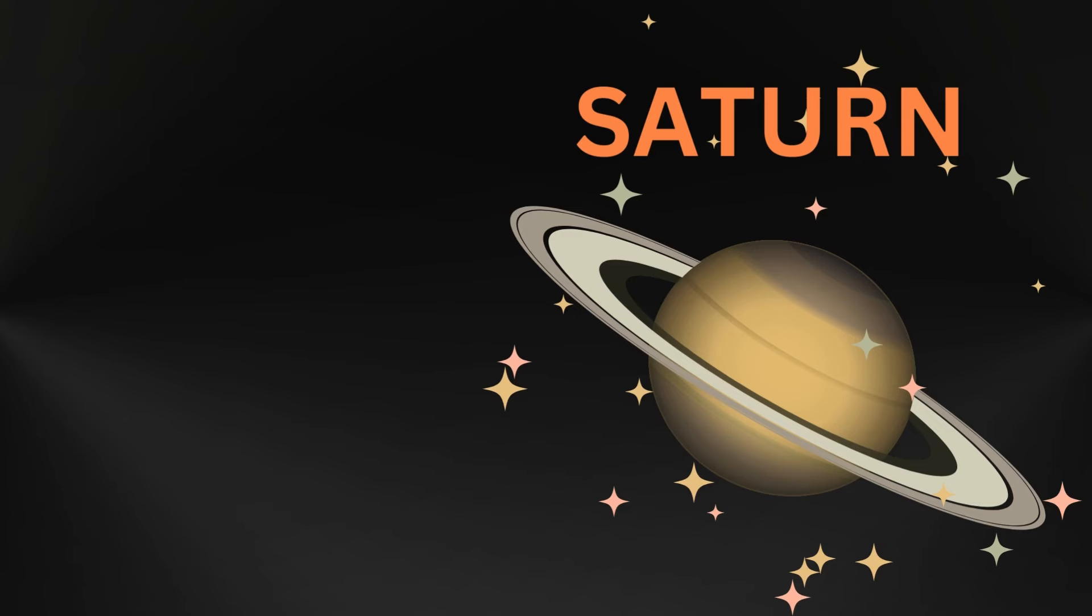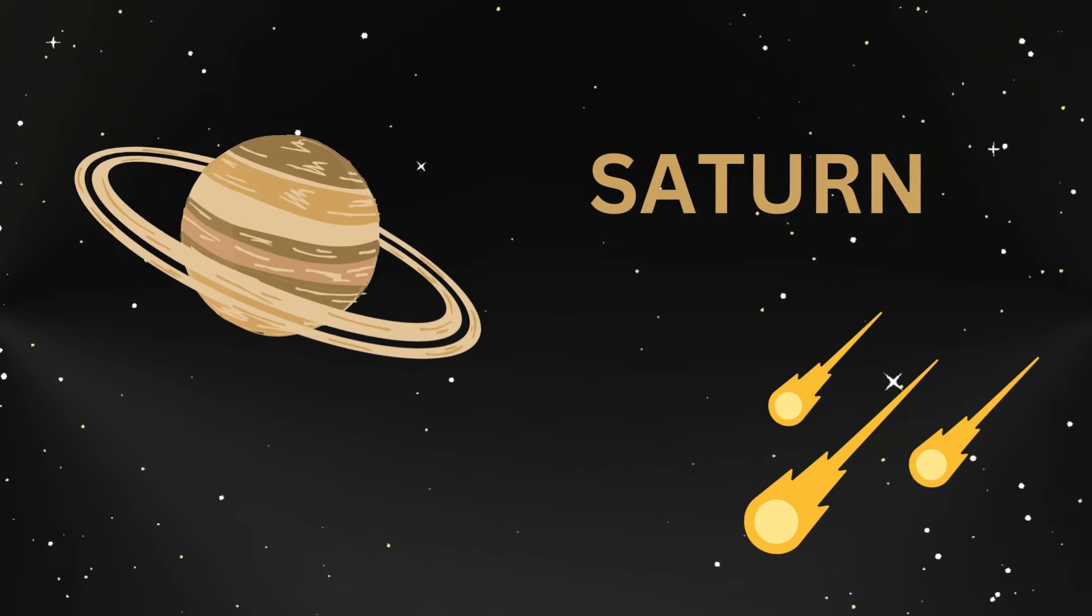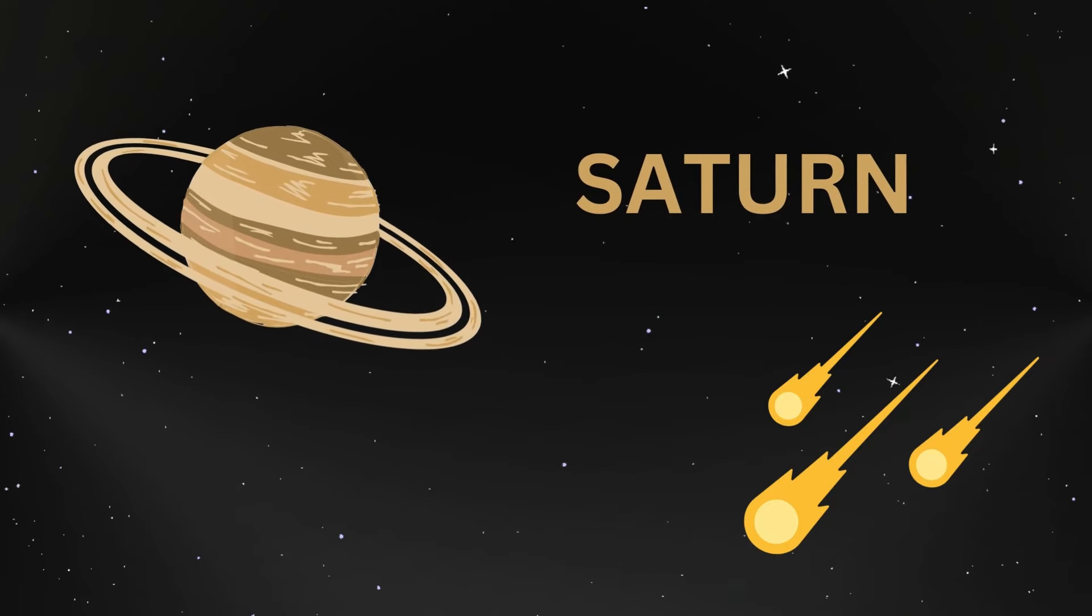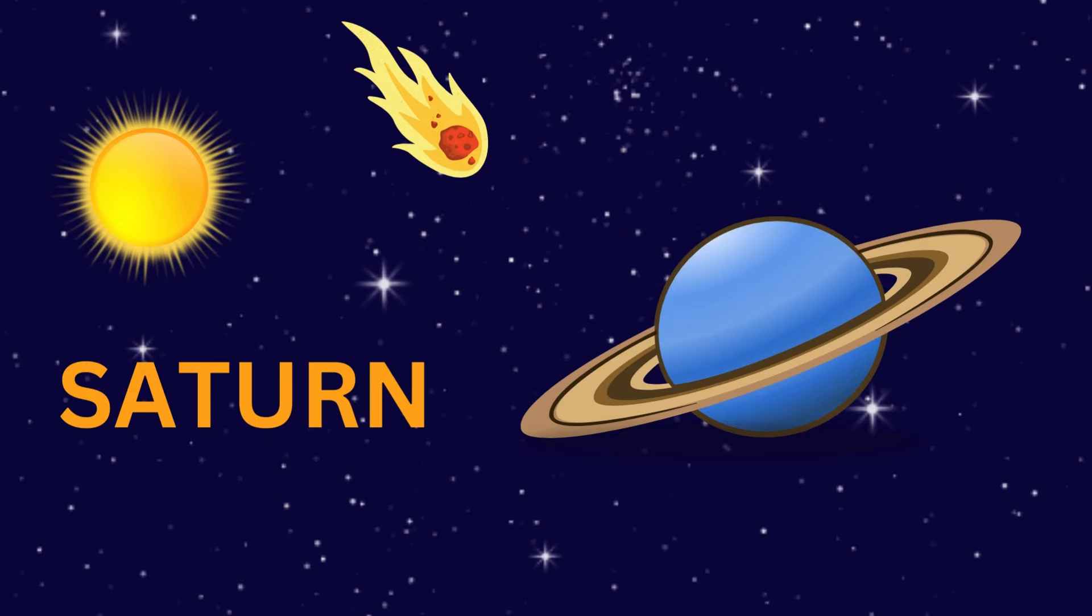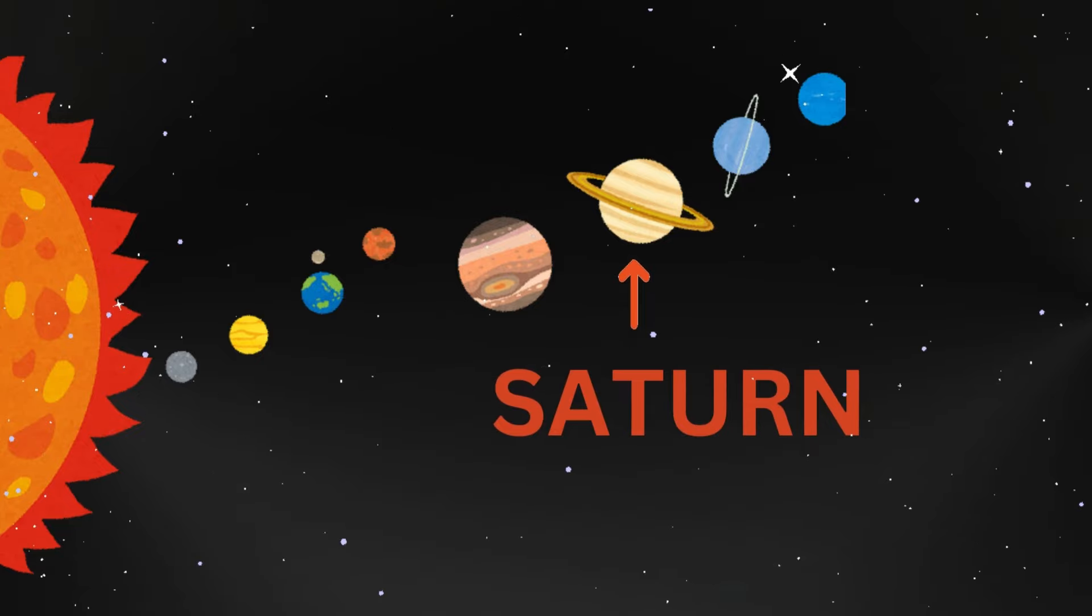The sixth planet from the sun is Saturn. Its rings so thin, made of dust and icy chunks. In the distant, boundless skies, Saturn six from the sun so wise. With rings so thin, a majestic view. Made of dust and icy chunks, sparkling blue.